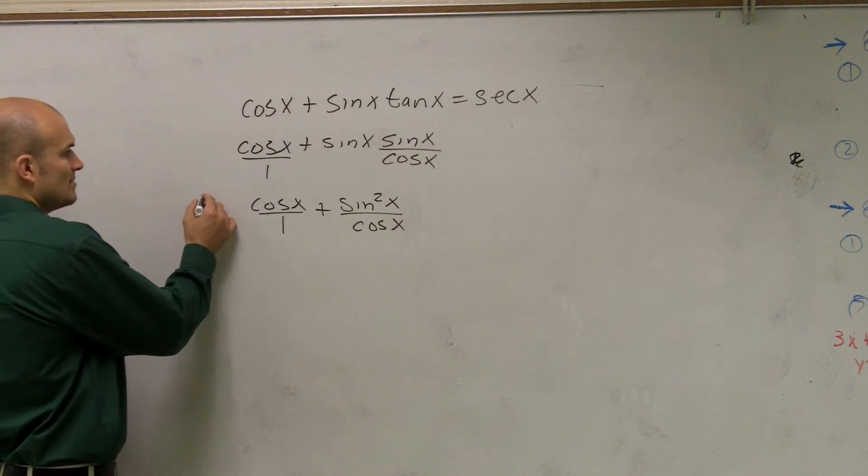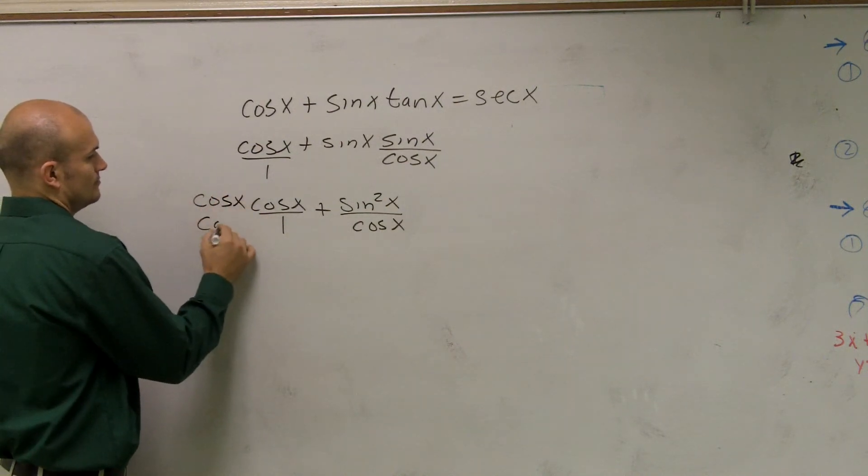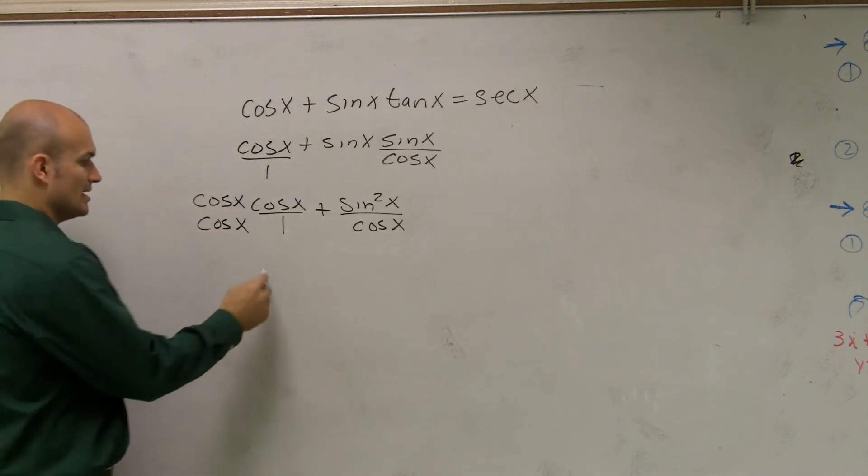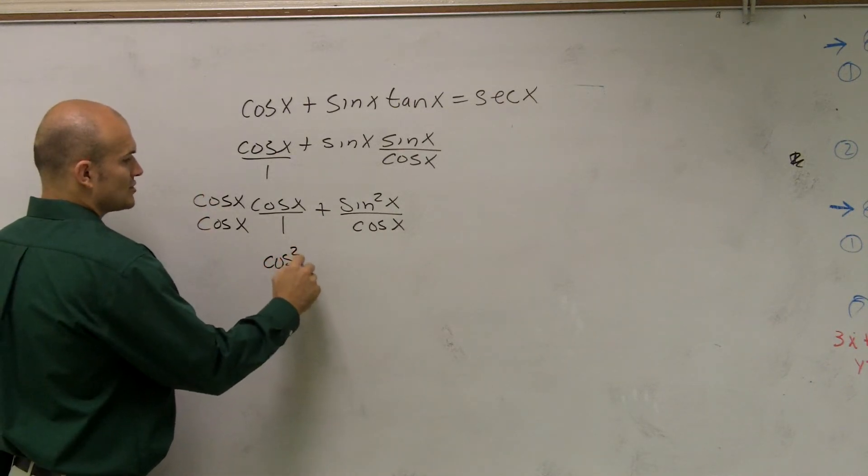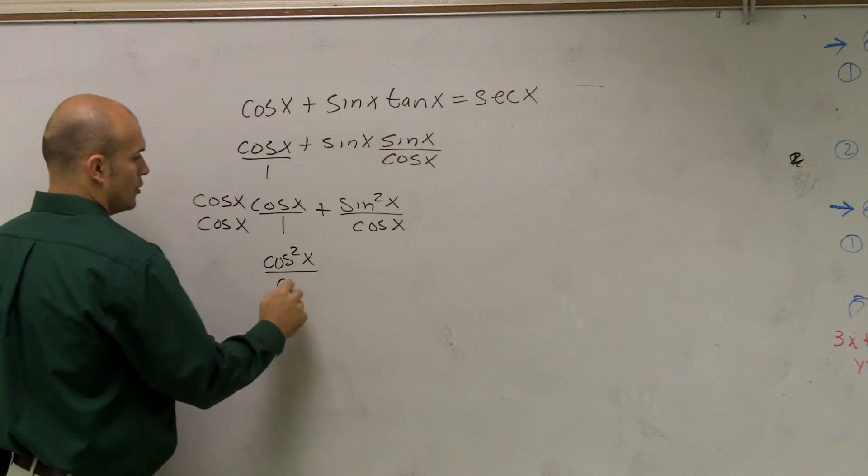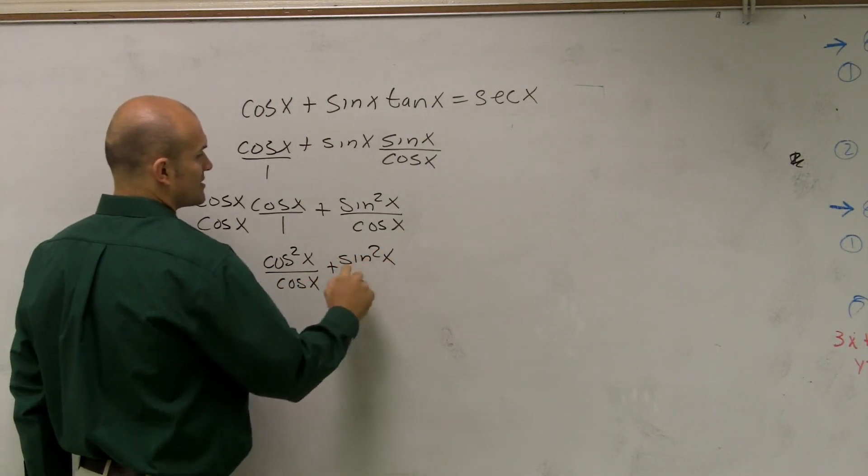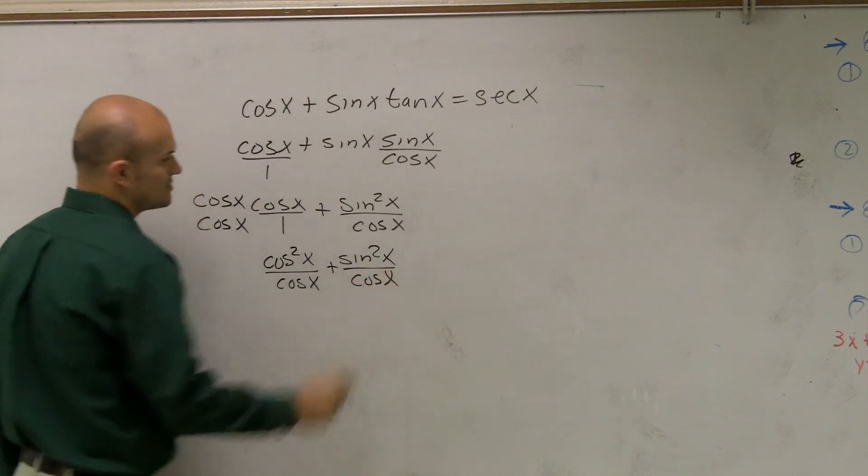So I'm going to have to multiply by cosine over cosine. What that gives me is cosine squared of x over cosine of x plus sine squared of x over cosine of x.